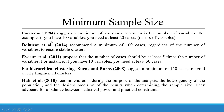Regarding minimum sample size: Forman suggests a minimum of 2 times m cases, where m is the number of variables. For example, if you have 10 variables, you need at least 20 cases. Dolnica recommends a minimum of 100 cases regardless of the number of variables to ensure stable clusters. Average guidelines propose the number of cases should be at least 5 times the number of variables — for instance, if you have 10 variables, you need at least 50 cases.